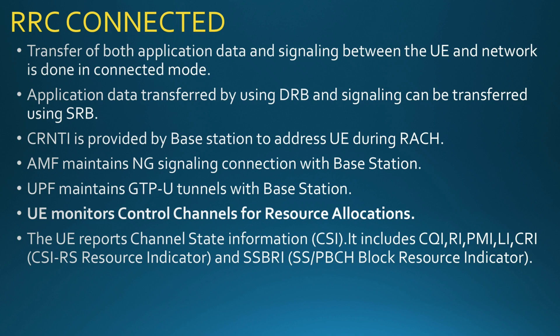In RRC Connected mode, both application data and signaling data are transferred between the UE and the network. Application data is transferred using the DRB (Data Radio Bearer), and signaling is transferred using the SRB (Signaling Radio Bearer). DRB and SRB will be discussed in more detail in another video.